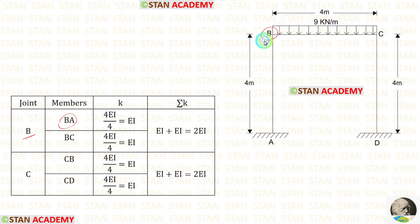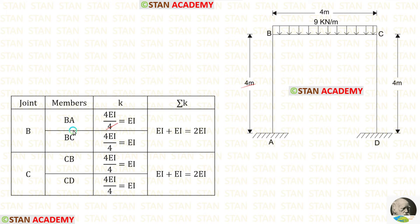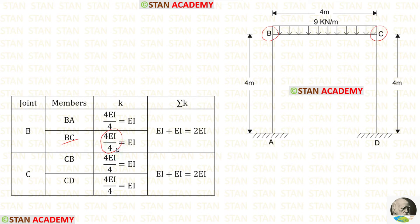Now let us find the stiffness values at joint B. For BA, the far end A is fixed, so the formula is 4EI/L. The length of BA is 4, so the stiffness of BA is EI. For BC, from joint B we look at point C, which is continuous. Using 4EI/L with length 4, the stiffness of BC is also EI.